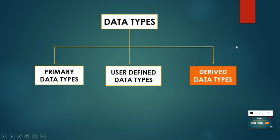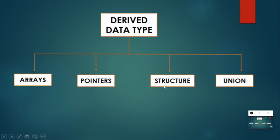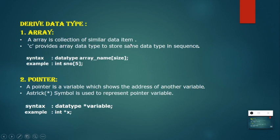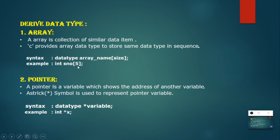Coming to the next type — derived data type. Derived data type contains arrays, pointers, structures, and unions. An array is a collection of similar data types. For example, int serial_number[5] automatically creates indices serial_number[0] to serial_number[4], because array lower boundary starts from zero and ends with n-1. All data types in the array must be the same.